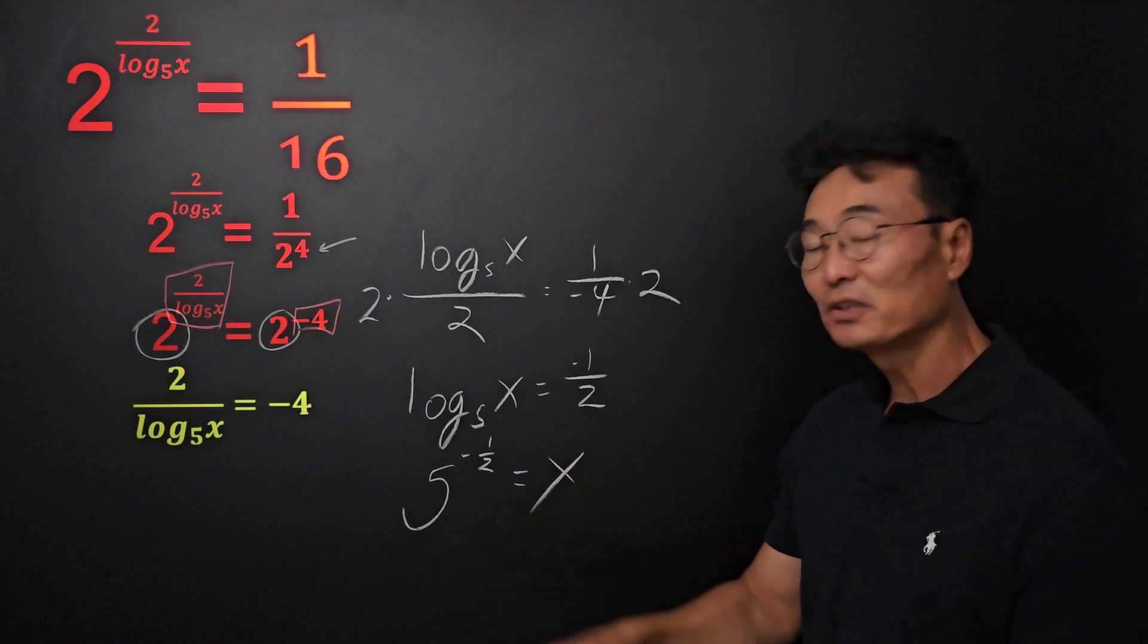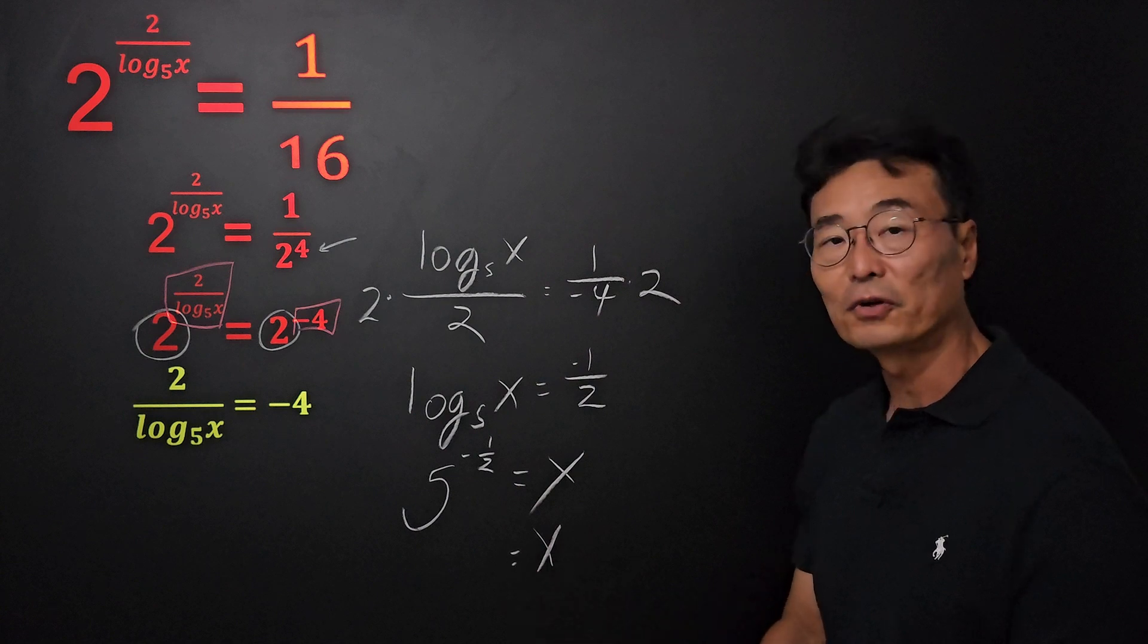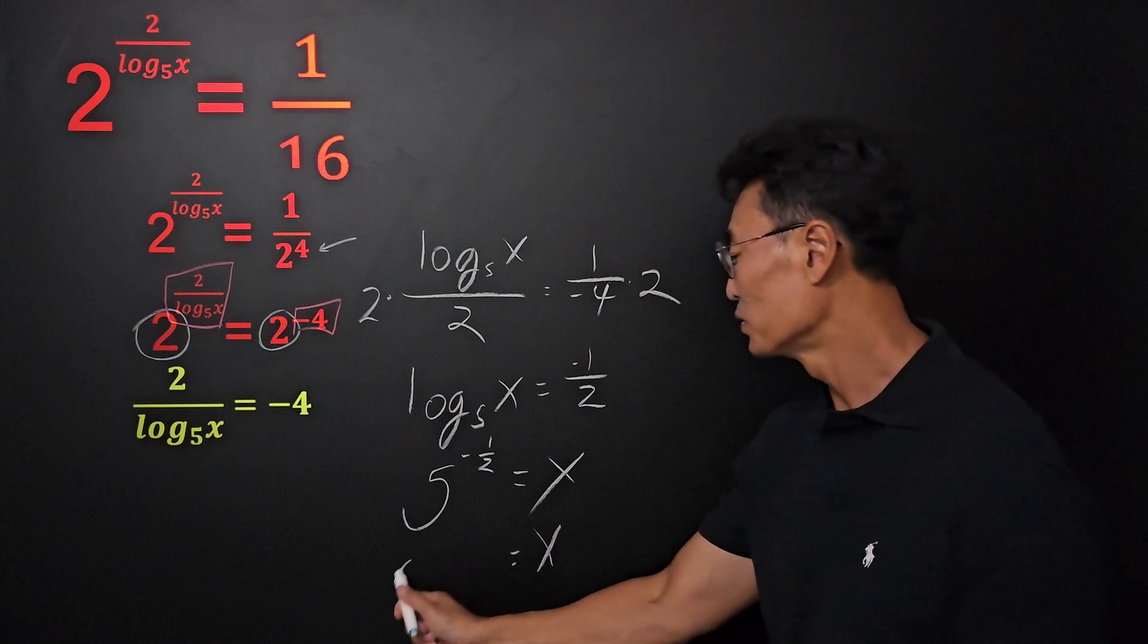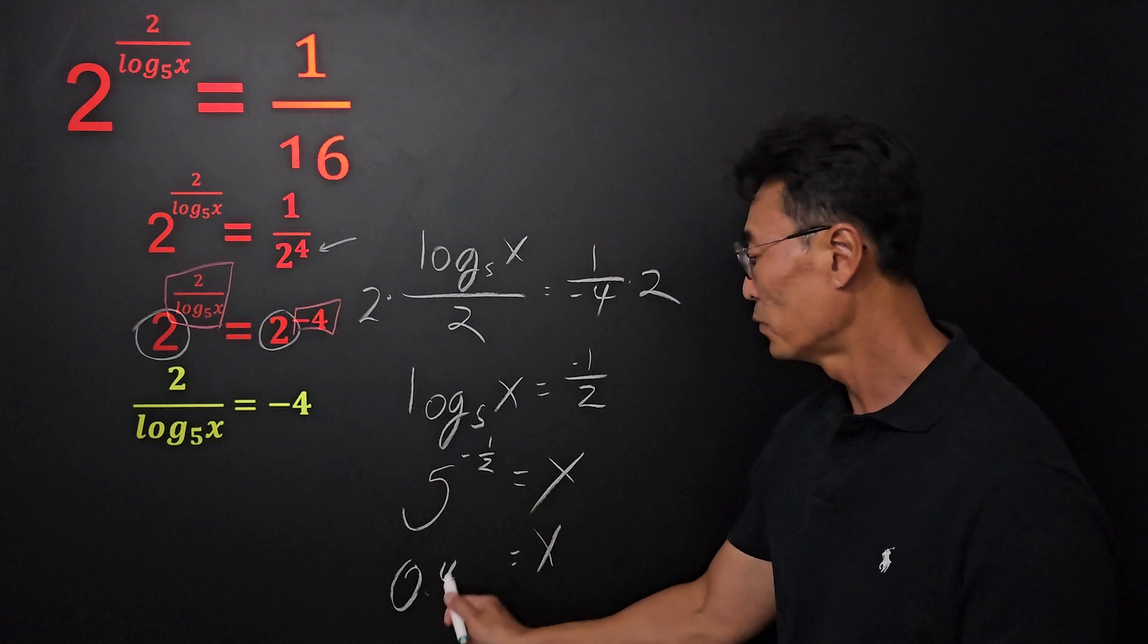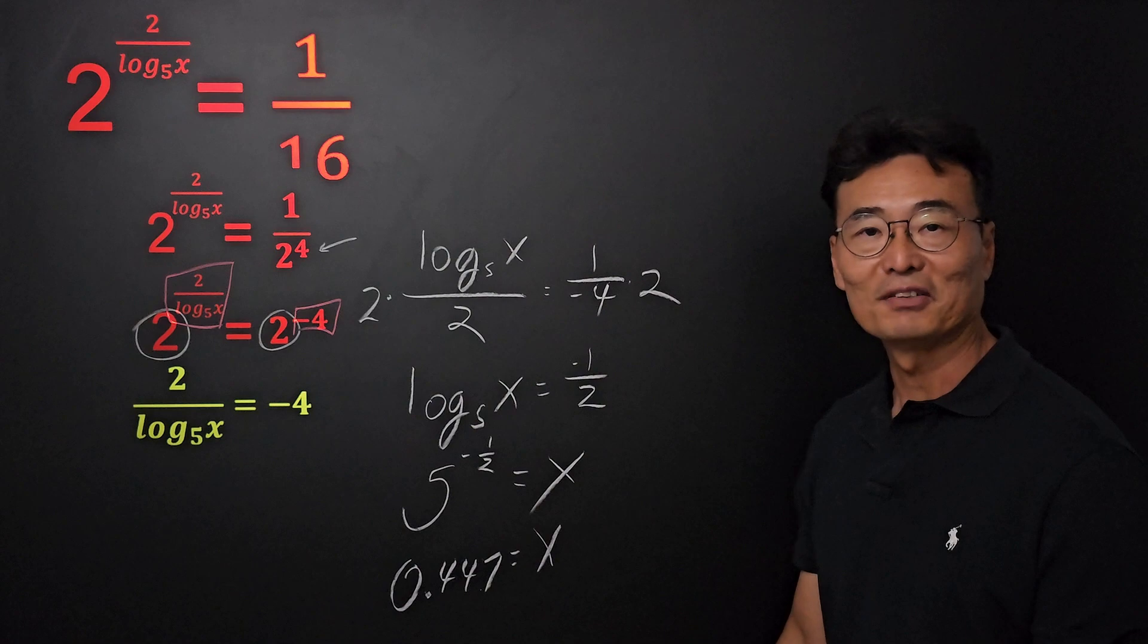That actually is our final answer. However, for those of you who prefer this, one answer is that's going to equal 0.447 rounded to three decimal places.